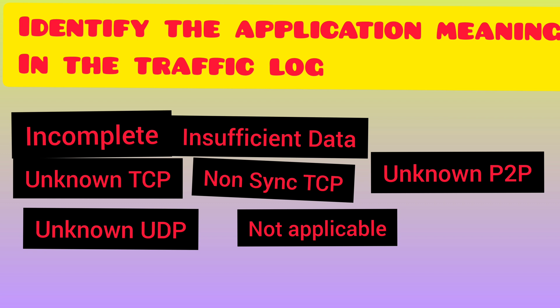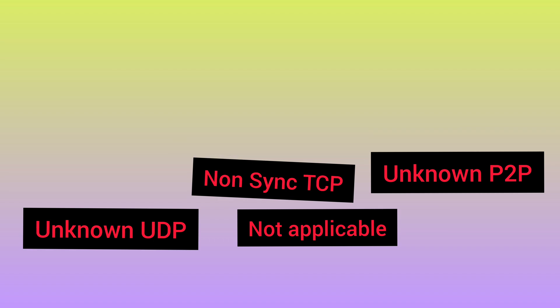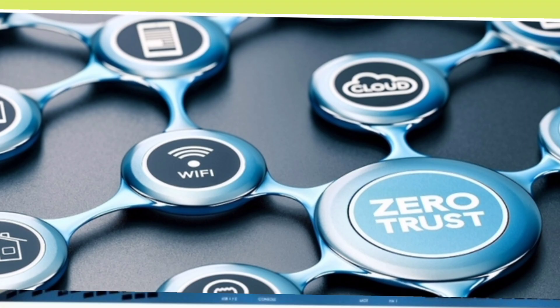Let's start with identifying the application meaning in the traffic log. We see traffic log messages like: incomplete, insufficient data, non-sync TCP, not applicable, unknown TCP, unknown UDP, and unknown P2P. To safely enable applications on your network, over the course of a session each packet is being evaluated for the App ID. The state of the App ID recognizes changes as the session progresses, and this state can be found in the traffic log.